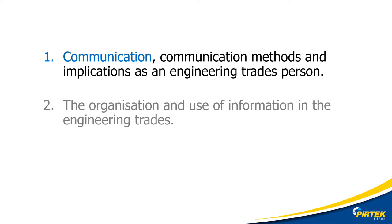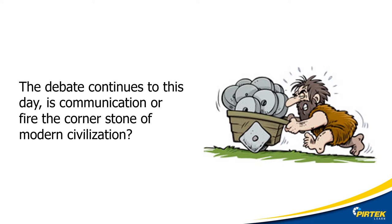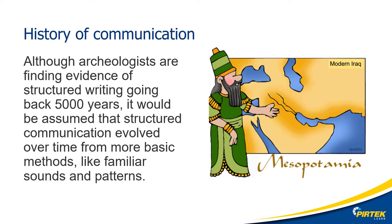Let's have a look at our first section: communication and communication methods. What is communication? The dictionary definition: the act or process of using words, sounds, signs or behaviours to express or exchange information or to express your ideas, thoughts and feelings. Scientists are still arguing about what was the most significant contribution to modern civilisation — communication or fire? Scientists are constantly looking for signs of the first communication between our ancestors. A caveman hitting another caveman over the head with his club and stealing his mammoth was a form of communication.